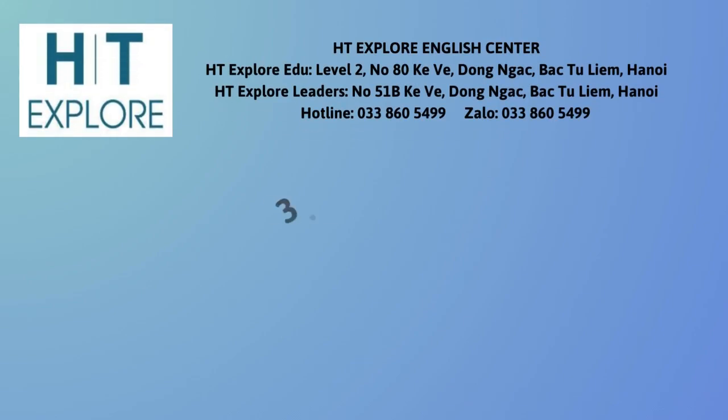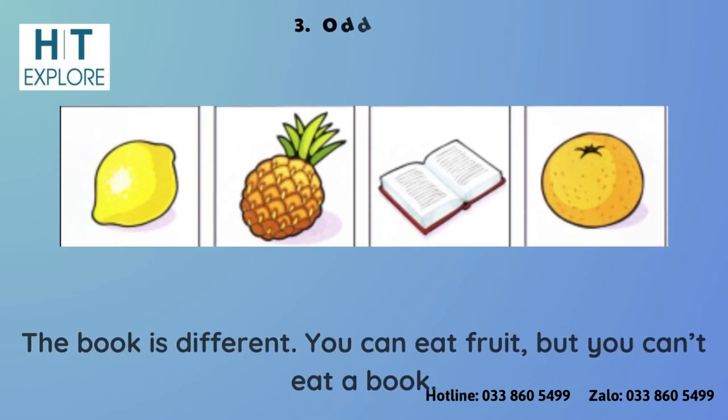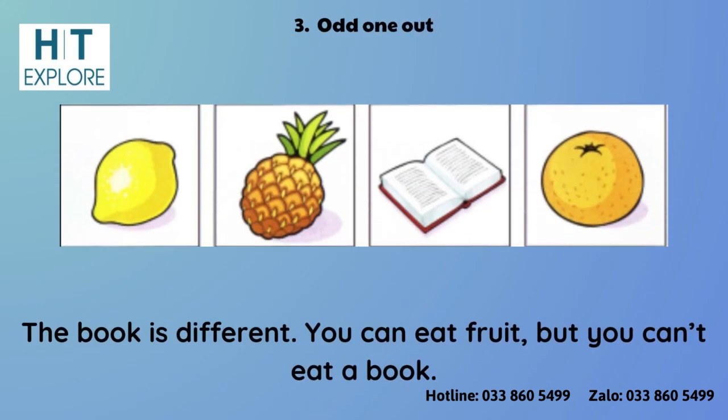Activity 3: Odd One Out. The book is different. You can eat fruit, but you can't eat a book.